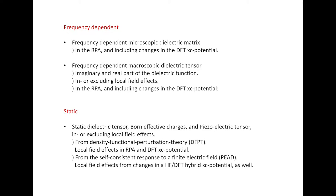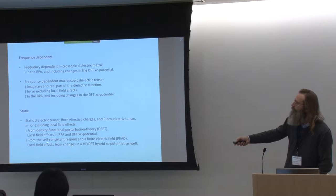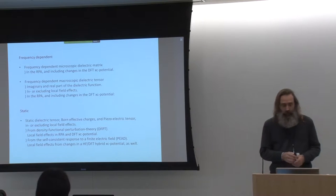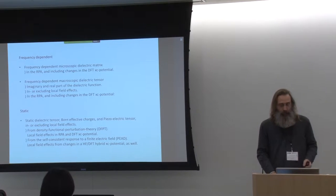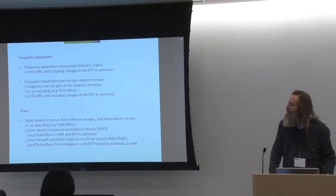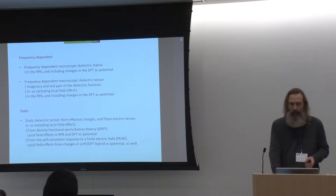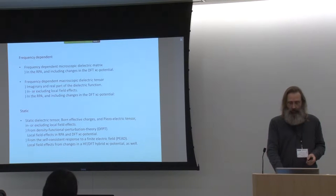There are reasons why we have these two methods that essentially yield the same information. Density functional perturbation theory only works for density functionals, not for hybrid functionals. The SPEED method that allows us to compute the self-consistent response to a finite electric field works for hybrid functionals as well, but only for insulating systems, not for metallic systems. So there are some limits to these different methods.